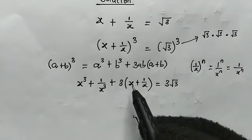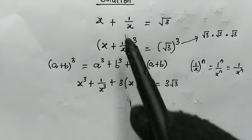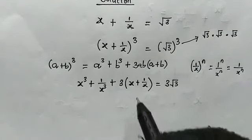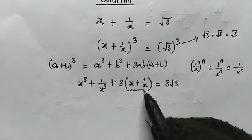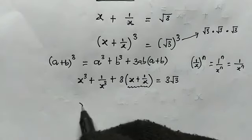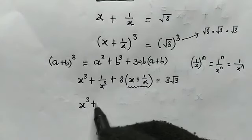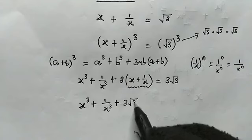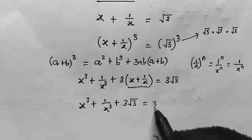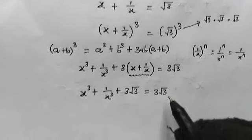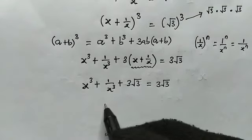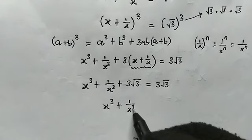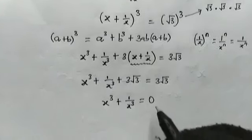Do not forget that x plus 1 over x equals root 3 from the original equation, so we replace that bracket with root 3. We then have x cubed plus 1 over x cubed plus 3 root 3 equals 3 root 3. Subtracting 3 root 3 from both sides gives x cubed plus 1 over x cubed equals 0.